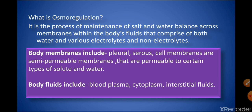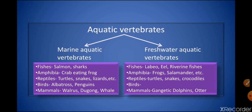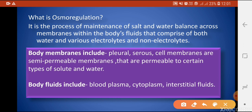The next term is osmoregulation — it is the process of maintenance of salt and water balance across membranes within the body's fluids, which comprise water and various electrolytes as well as non-electrolytes. Inside our body there are various fluids such as plasma, cytoplasm, and interstitial fluids. To maintain proper salt and water concentration, these fluids flow in particular amounts through body membranes such as the pleural membrane, serous membranes, and cell membranes, which are semi-permeable.